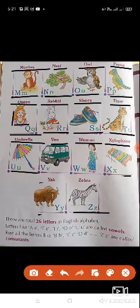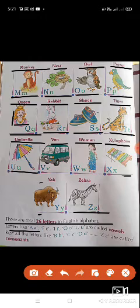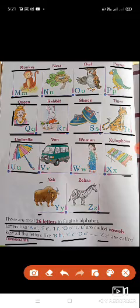So little kids, listen carefully. There are total 26 letters in English alphabet. How many letters in English alphabet? 26 letters. Letters like A, E, I, O, U are called vowels. Rest of the letters like B, C, D and all are called consonants. Only 5 letters A-E-I-O-U are called vowels, and other letters are called consonants.